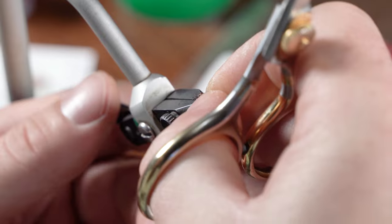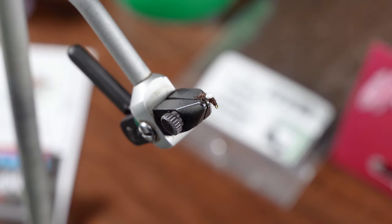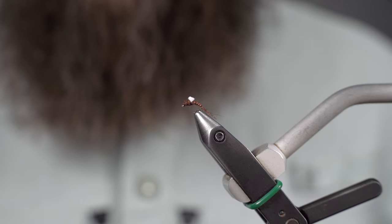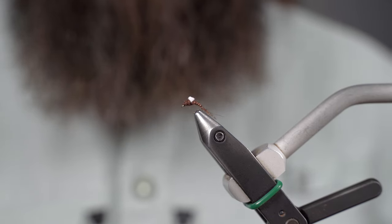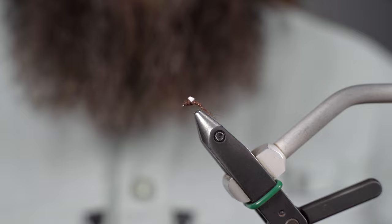And there's your chocolate foam back emerger. Super easy fly. Very productive especially in the winter when the little midges are popping off in those smaller sizes 20s and 22s. And this size works great for the baetis hatches.